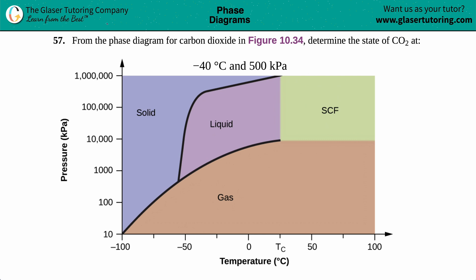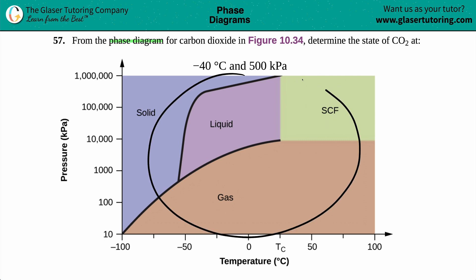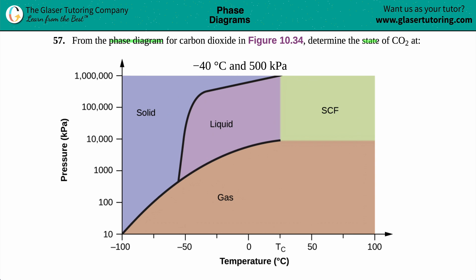Number 57: from the phase diagram for carbon dioxide, which is figure 10.34, we need to determine the state of CO₂ at negative 40 degrees Celsius and 500 kilopascals.